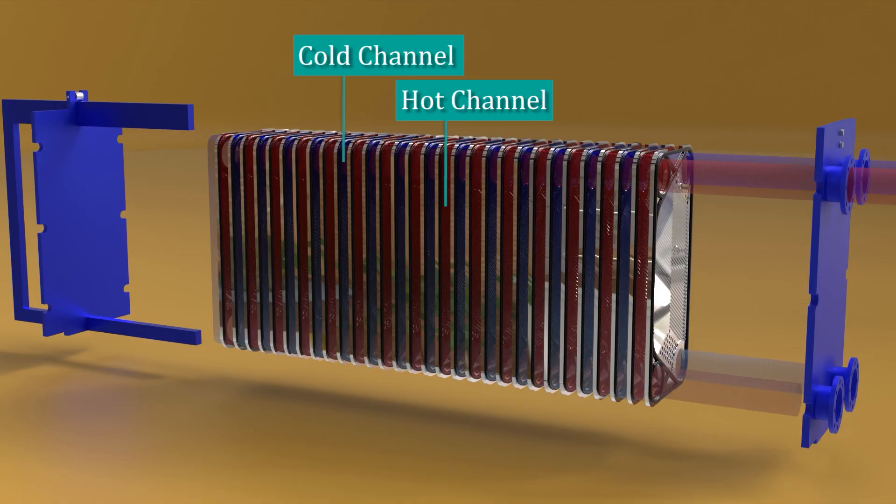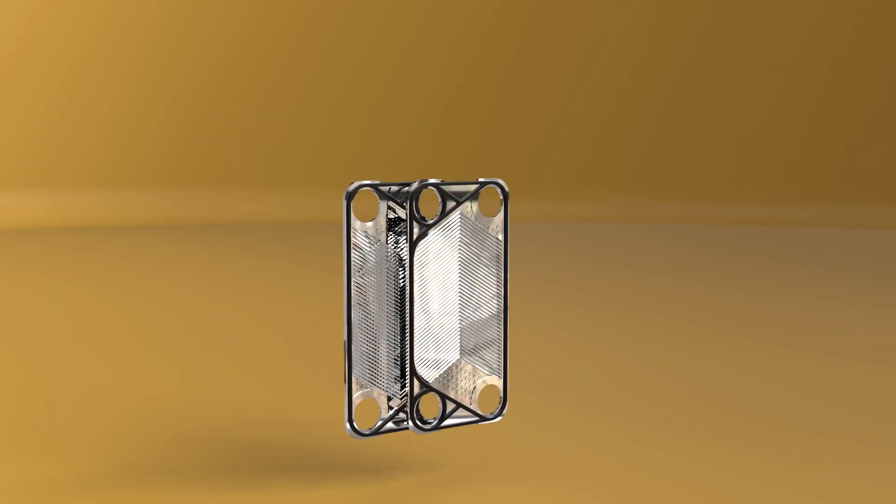Because the plates are so thin and have a large surface area, the heat quickly moves from the hot fluid side to the cold side.